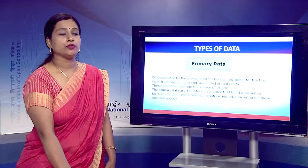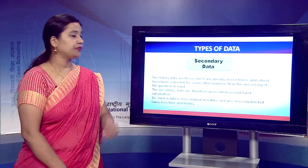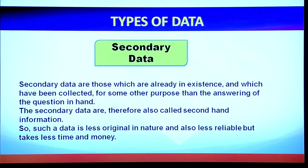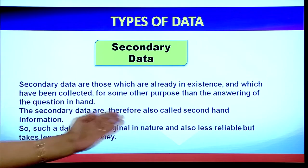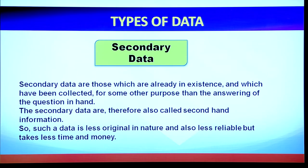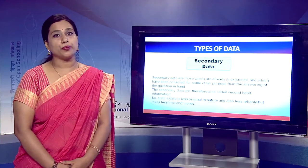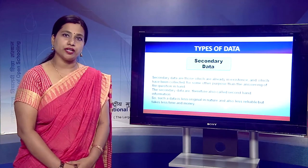Secondary data are those data which are already in existence and have been collected for some other purpose by the investigator. This is also known as second-hand information. Secondary data is less reliable, less original in nature, and takes less time and money.